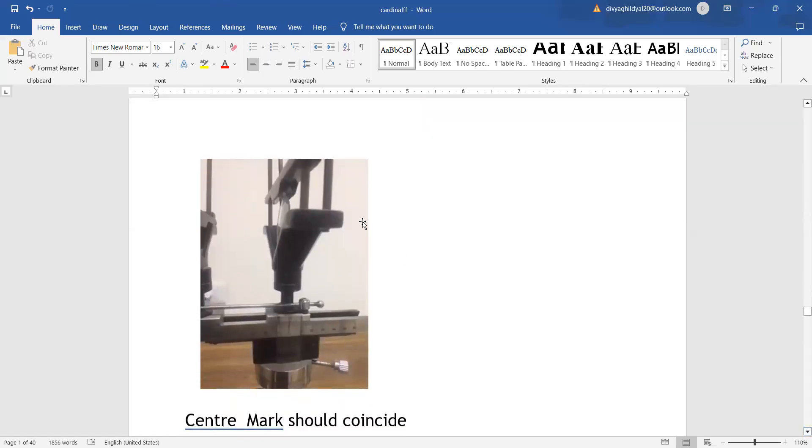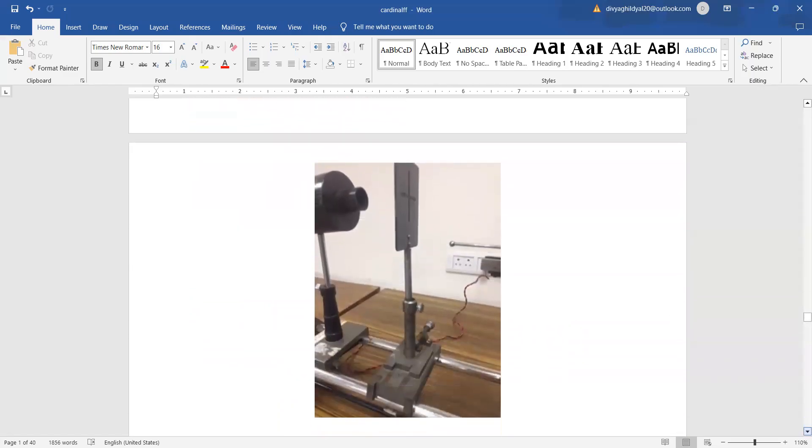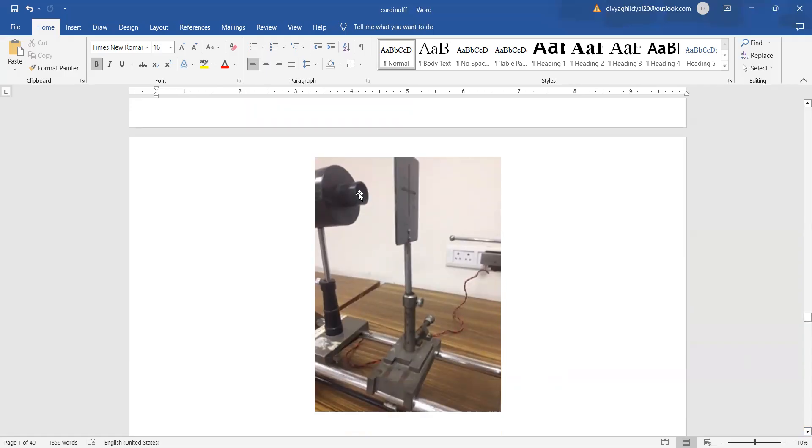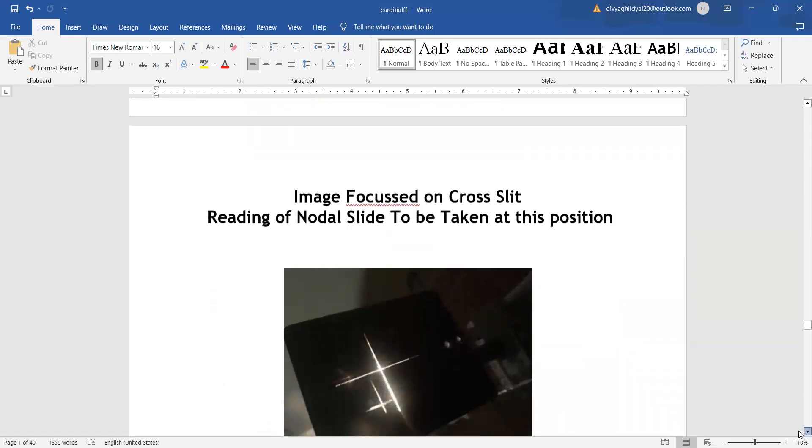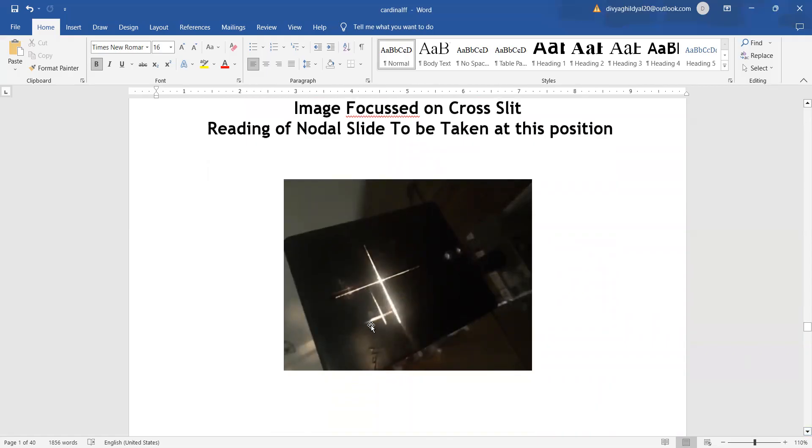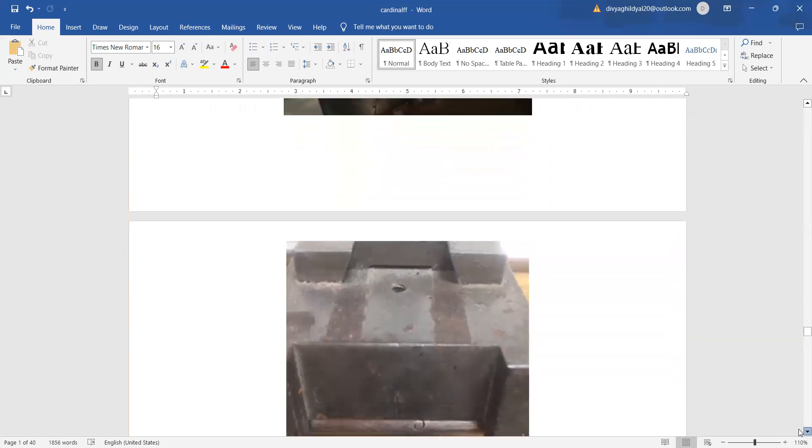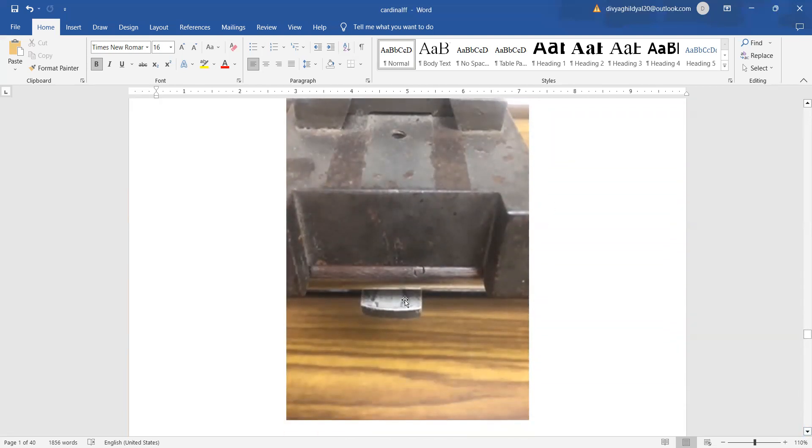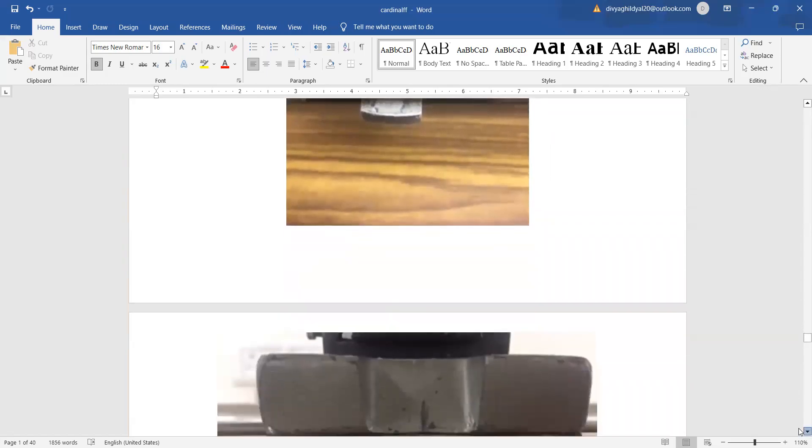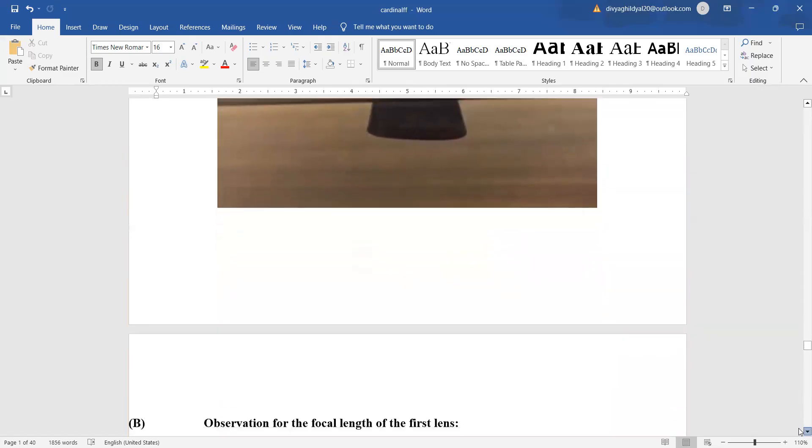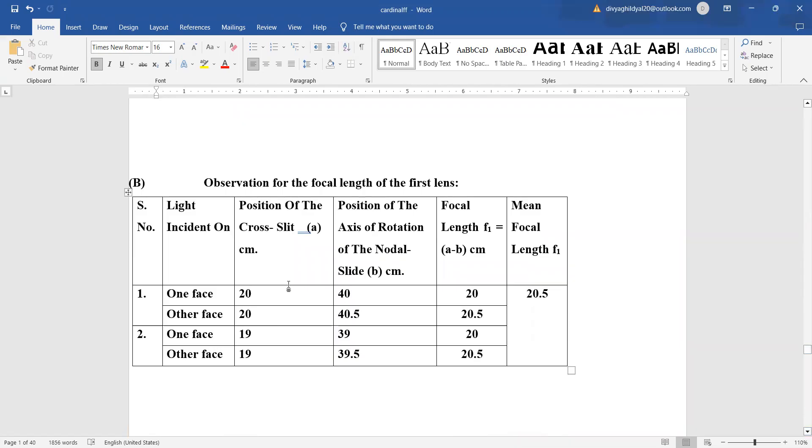How do we begin with the experiment? We will take a simple convex lens and put it in the holder of nodal slide. Be very careful that the nodal slide setup is set in the center, then place it on the optical bench in front of the cross slit and light source. See that the light passes through the cross slit. Then move it on the optical bench until a sharp image is formed on the cross slit. When this image forms, take the reading of optical bench at the cross slit position and the nodal slide position. Note these readings in the observation table.